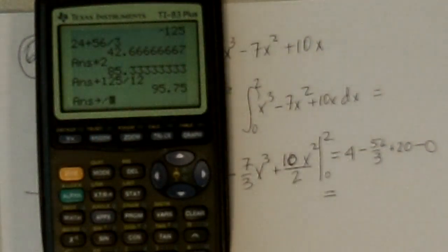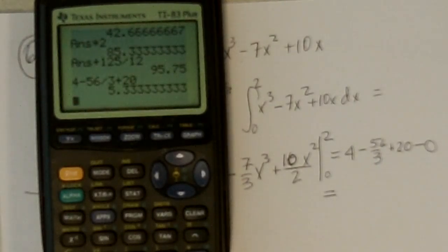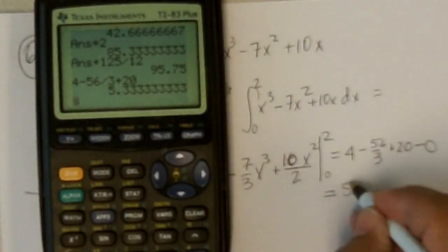And so I get the area of this first piece to be... Let's work it out here on the calculator. Clear. 4 minus 56 divided by 3 plus 20. And it's 5 and 1 third. Exactly.